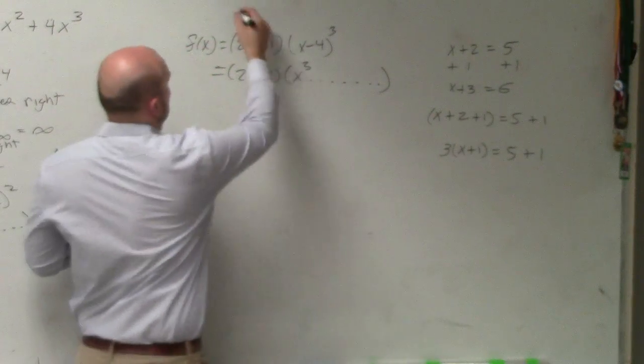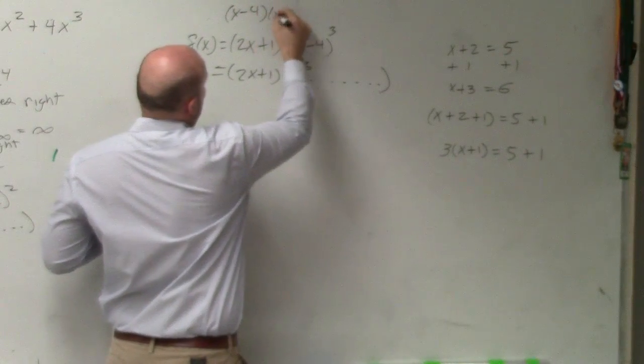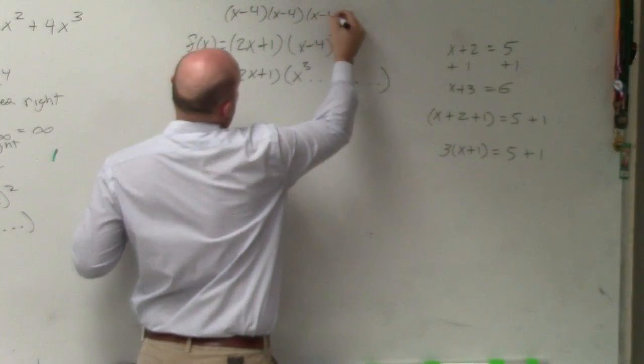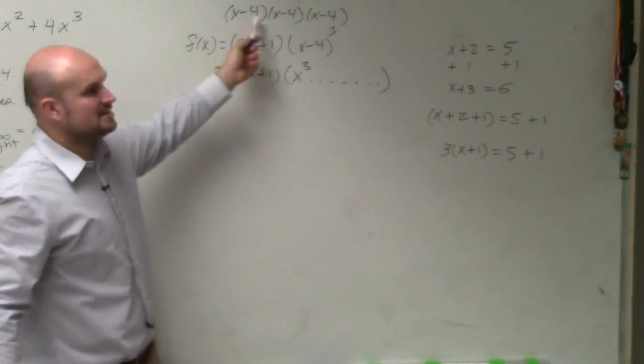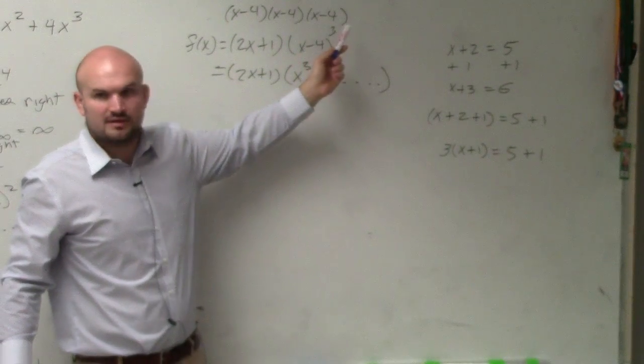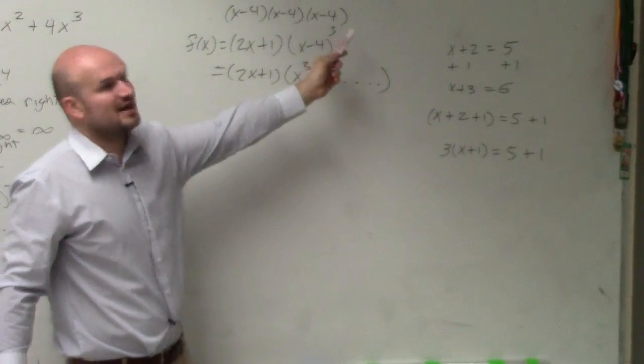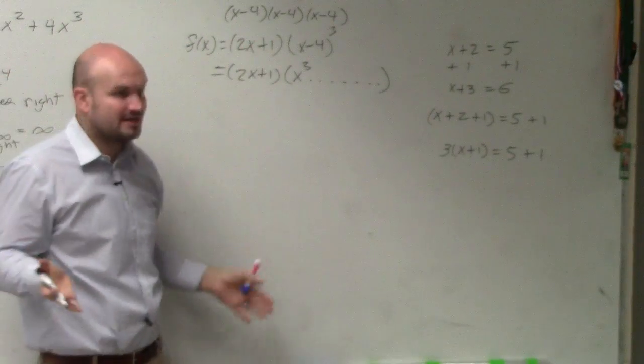When you multiply this out, x minus 4 times x minus 4 times x minus 4, you guys can agree with me, you're not going to somehow get to x to the 10th, are you? No. x times x is x squared, and then times another x would be x cubed. That's the highest power you're going to get.